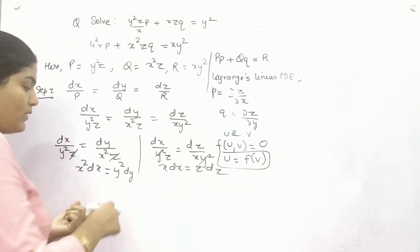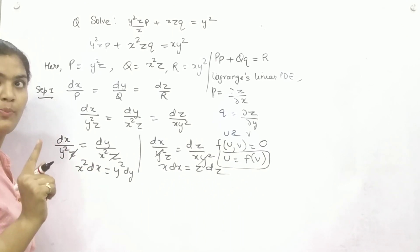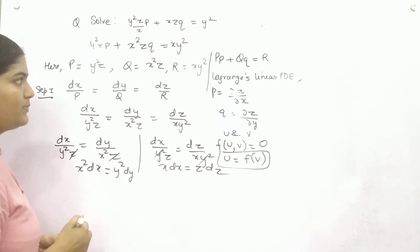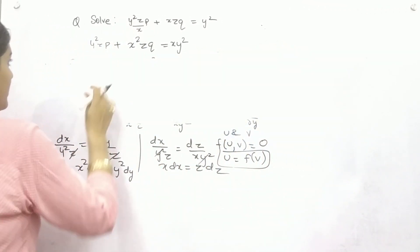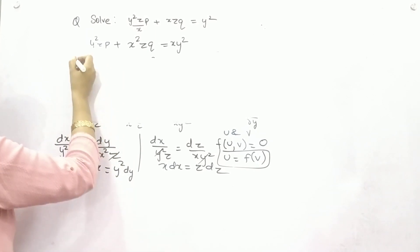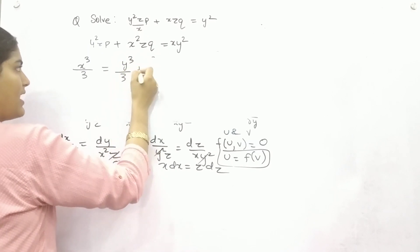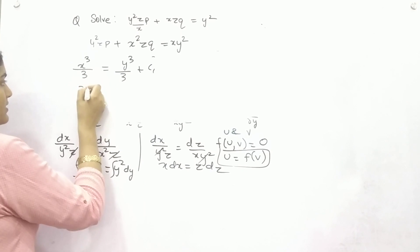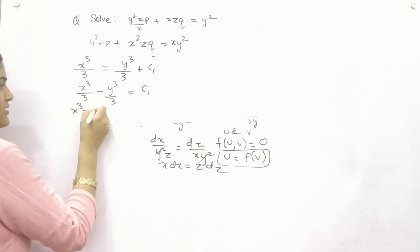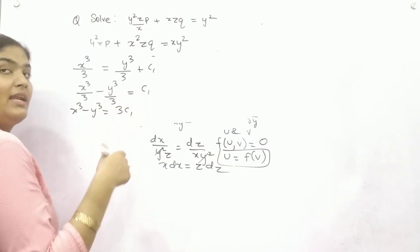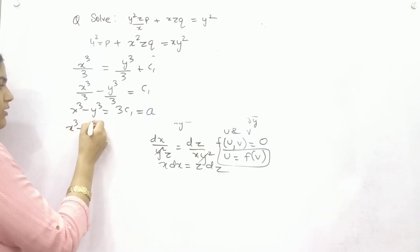Now integrate both sides to remove the differential operators. Integrating x²dx = y²dy, add one to the power and divide: x³/3 = y³/3 + c₁. Taking everything to the left-hand side and taking 3 as common, you get x³ − y³ = 3c₁. Consider 3c₁ as a new constant. This is your first function u.